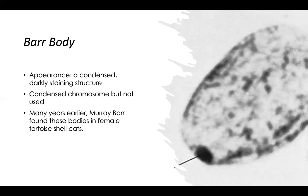A normal genetic female will have two X chromosomes, but one of those would become a Barr body. A normal genetic male will have one X and one Y chromosome, but will not have any Barr bodies. Several years before Mary Lynn's hypothesis, Murray Barr discovered Barr bodies in female tortoiseshell cats, but did not know what purpose they served.